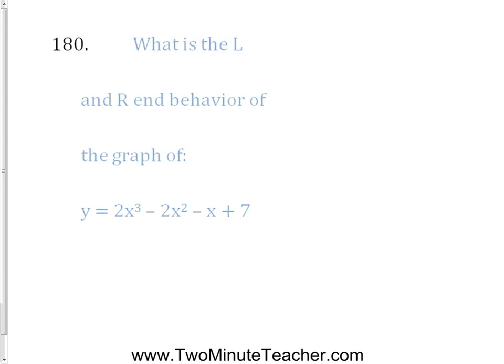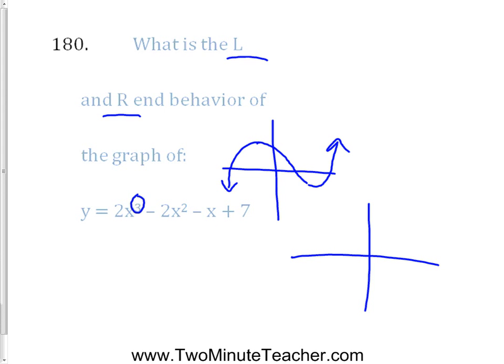What's the left- and right-hand behavior of 2x to the third minus 2x squared minus x plus 7? You can tell by looking at the degree — this is degree 3, which is an odd-numbered degree. If it's an odd-degreed function, then the right-hand and left-hand ends go in opposite directions. I don't know which way yet, but they're heading opposite directions. It could be up on the right and down on the left, or down on the right and up on the left.